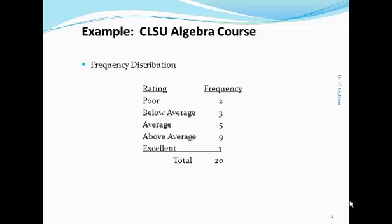The frequency for each class gives the number of times that that response category was seen in the data set. If you go back to the previous slide, you will see that there were exactly two poor responses, three below average responses, five average responses, nine above average responses, and one excellent response. If you sum the frequencies of all of your classes, you should always get the number of items contained in the entire data set.